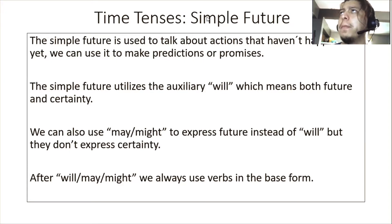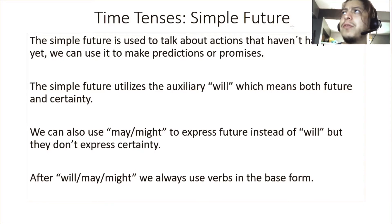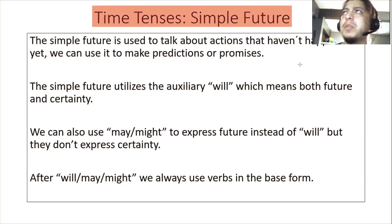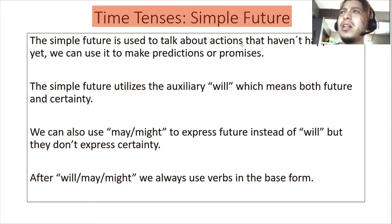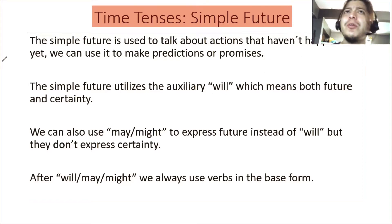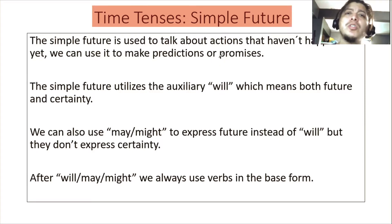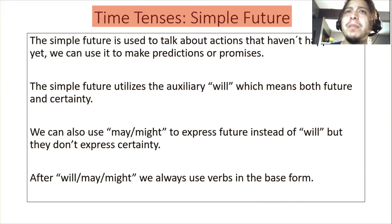Time tenses — simple future. The simple future is used to talk about actions that haven't happened yet. Very simple: things that haven't happened yet, they will happen in the future. We can use it to make predictions or to make promises. Again, it is to speak about events that are yet to happen.